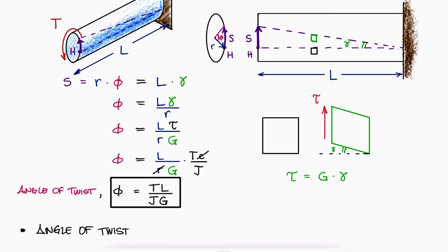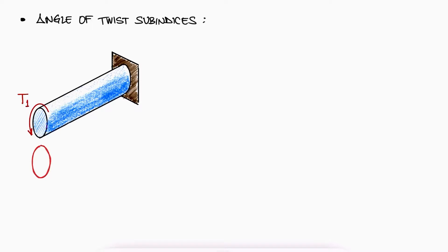If we have two external torques, T1 and T2, applied at two distinct locations of a rod fixed at one end, we can find the angle of twist of B with respect to A, for example.